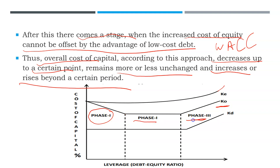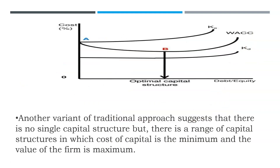Initially, since cost of debt is less than cost of equity, the weighted average cost of capital declines. But after a certain level, cost of equity starts increasing, so the advantage of debt gets offset. After a further level, cost of equity increases so much and debt cost also starts rising, so that advantage is lost and overall cost of capital increases. This tells us that the optimum capital structure lies somewhere in this middle range, where weighted average cost of capital is minimum.